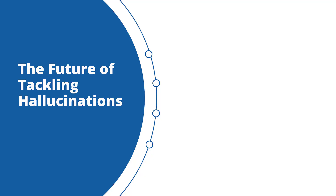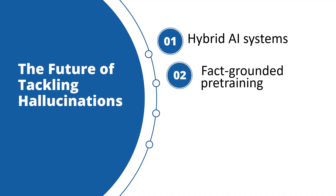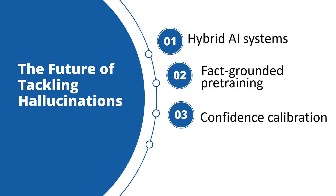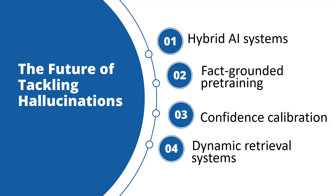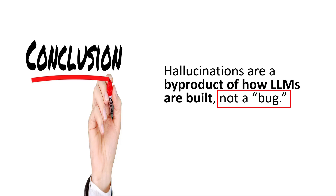Let's discuss the future of tackling hallucinations. Reducing hallucinations is not about making LLMs perfect — it's about making them trustworthy enough for the task at hand. Future research is exploring ideas such as hybrid AI systems that combine symbolic reasoning with neural models. Symbolic reasoning, sometimes called classical AI, works with clear rules, knowledge graphs, and logic-based systems. Other directions include fact-grounded pre-training on curated verified datasets, confidence calibration to teach models to express uncertainty instead of fabricating, and dynamic retrieval systems that always pull in fresh, real-time knowledge. In short, hallucinations are a by-product of how LLMs are built — not a bug. But with the right combination of retrieval systems, fine-tuning, prompt engineering, and human oversight, we can drastically reduce the impact of hallucinations.